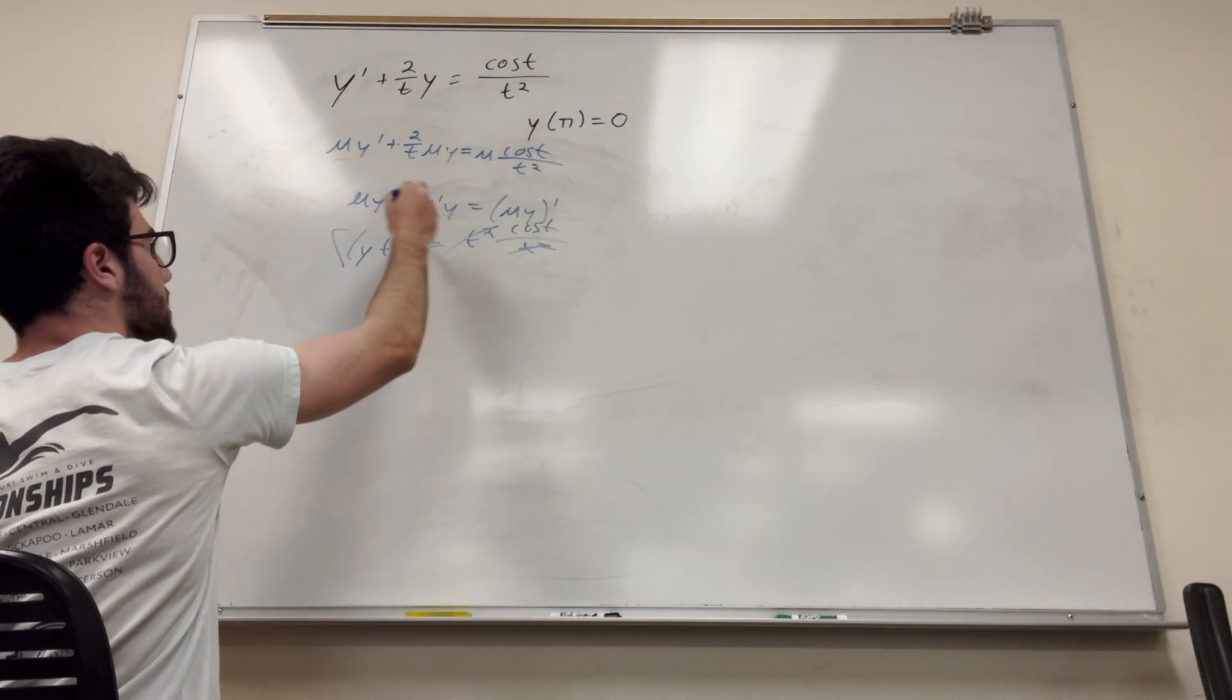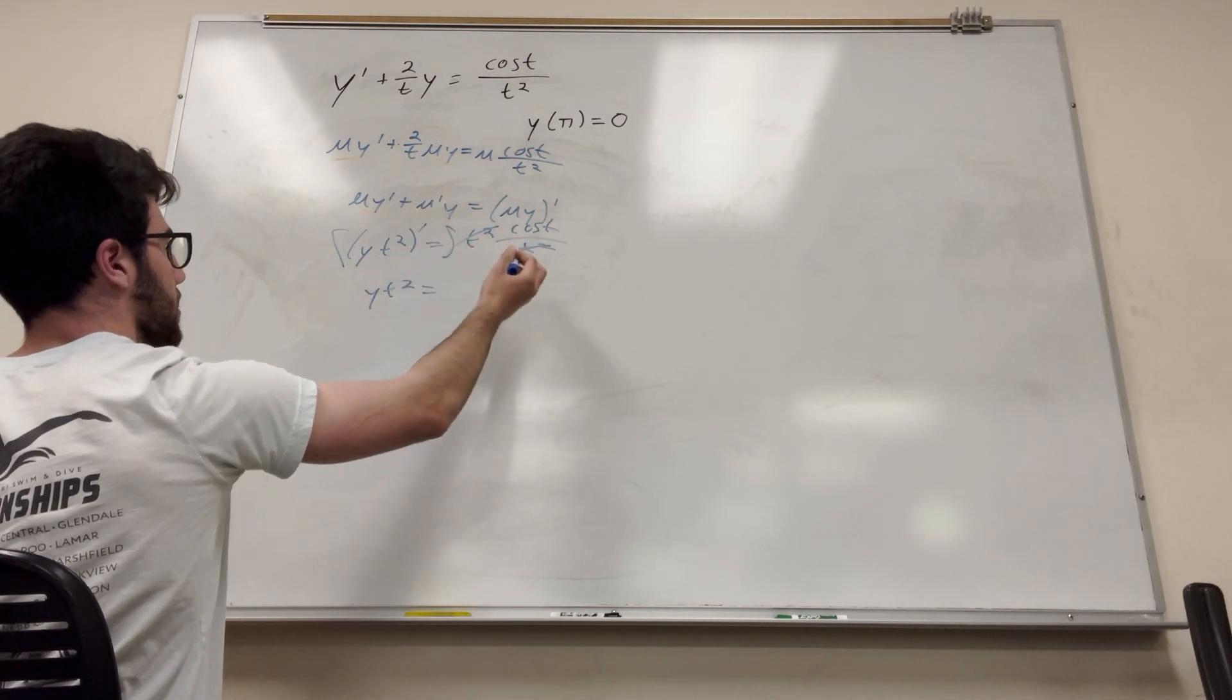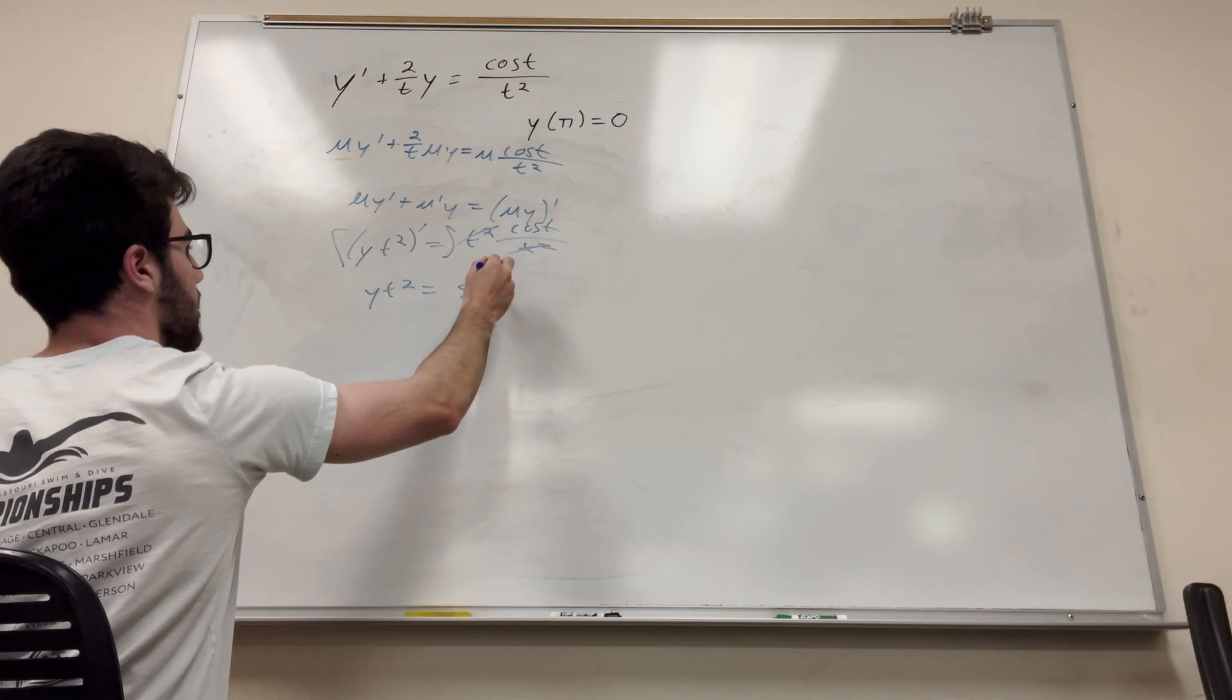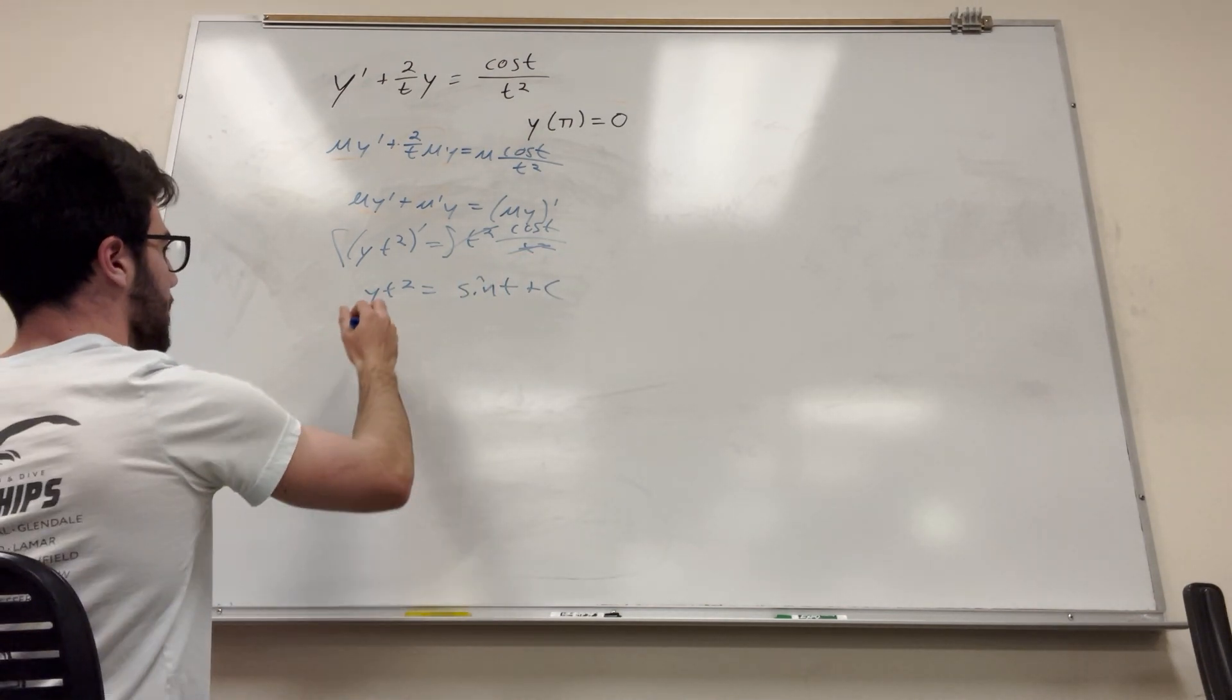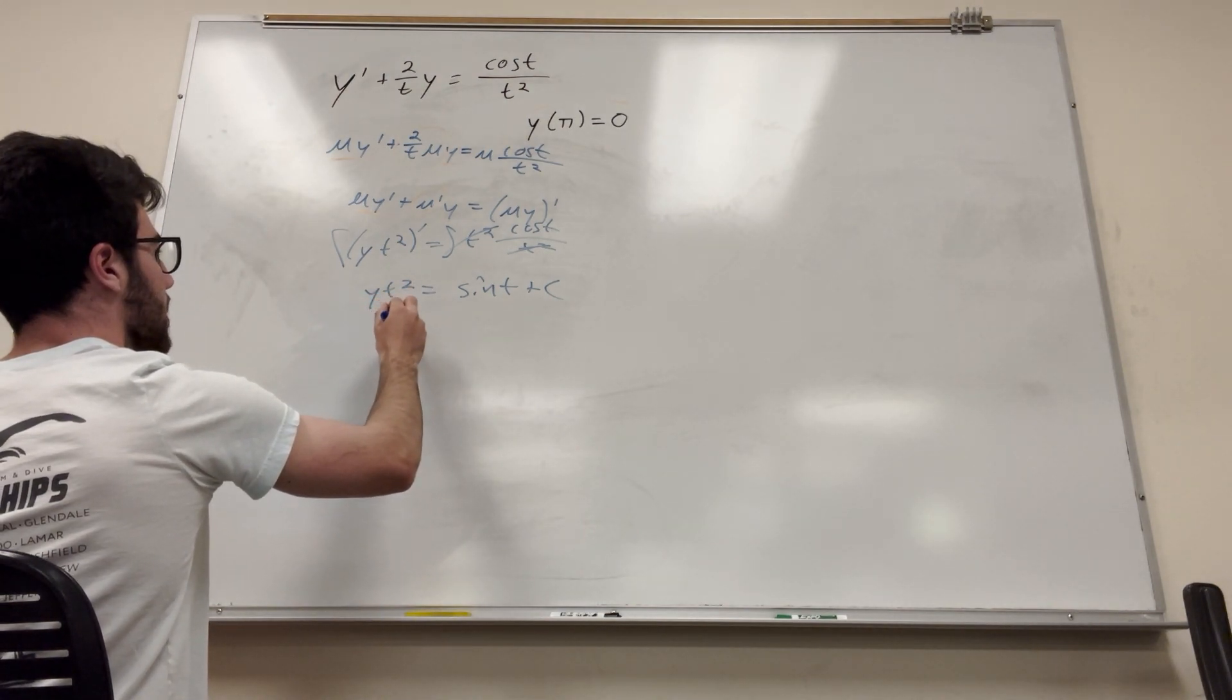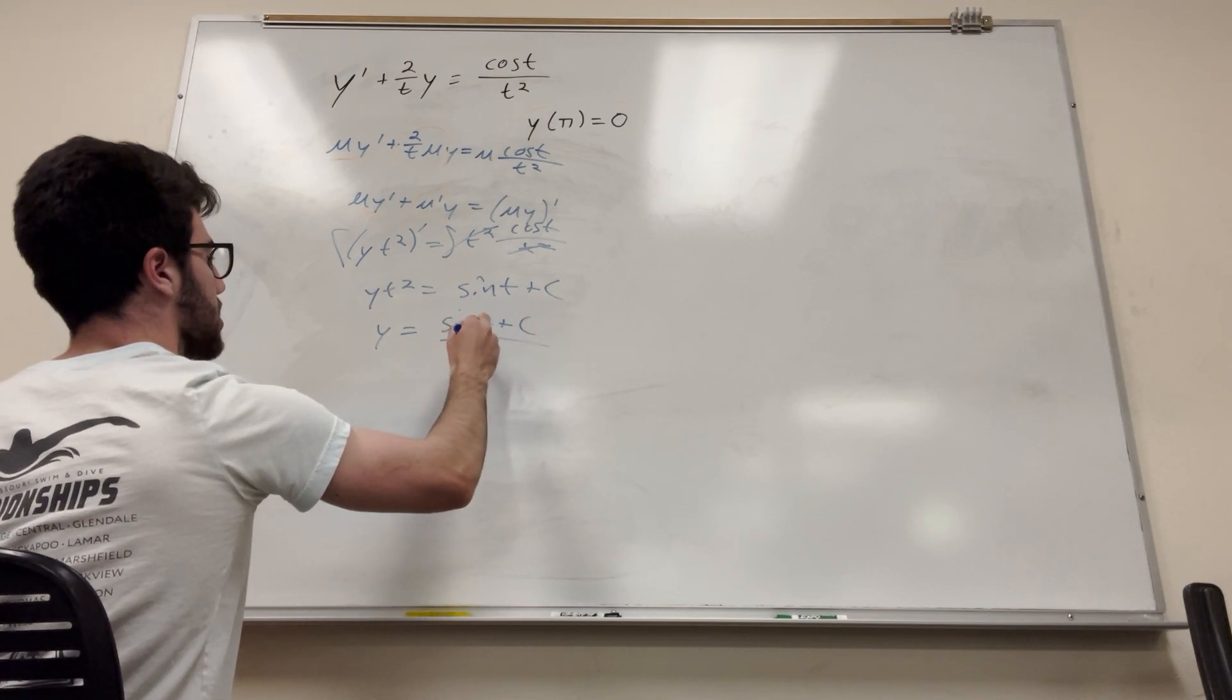So then if we take the integral of both sides, it's just going to be y t squared is equal to the integral of cosine, which is sine, right, plus c. Then it's going to be divided by t from both sides. So y is equal to sine of t plus c over t squared.